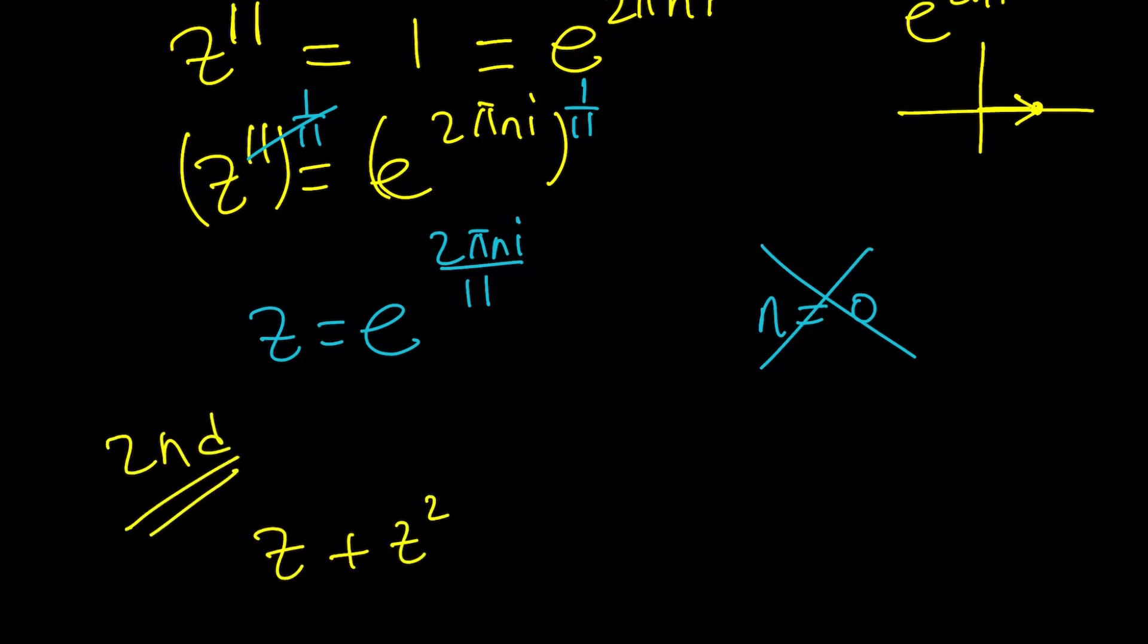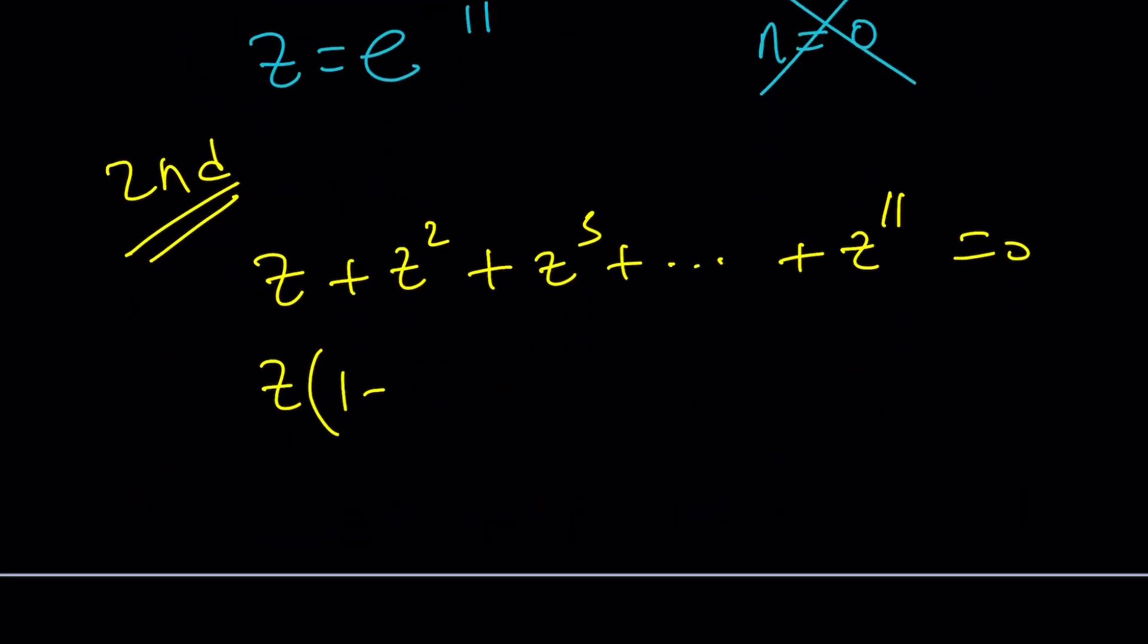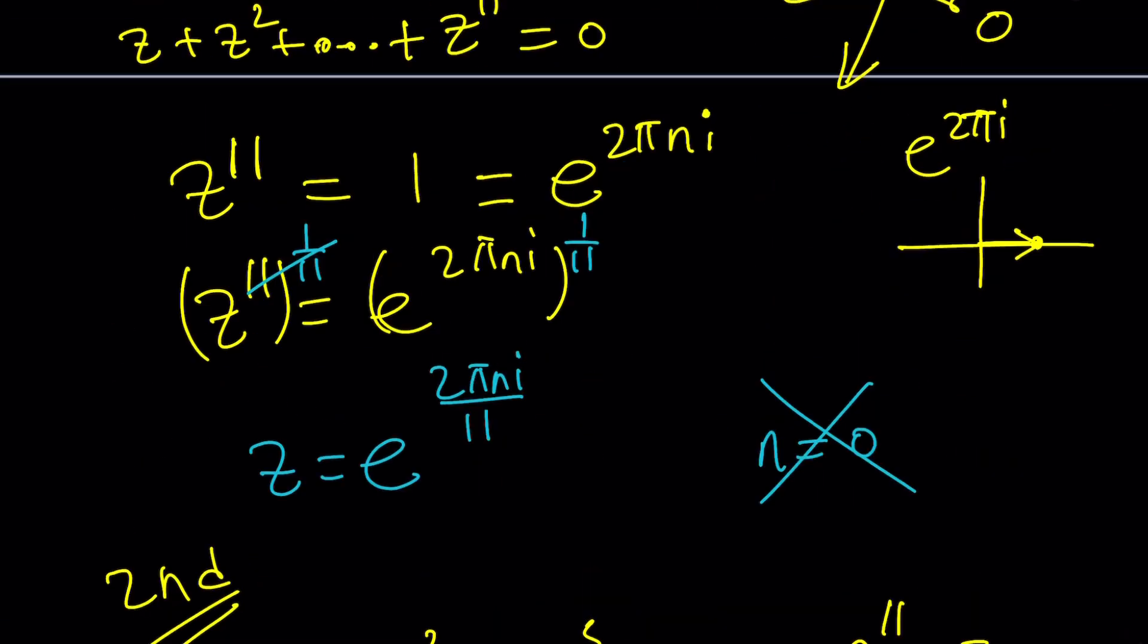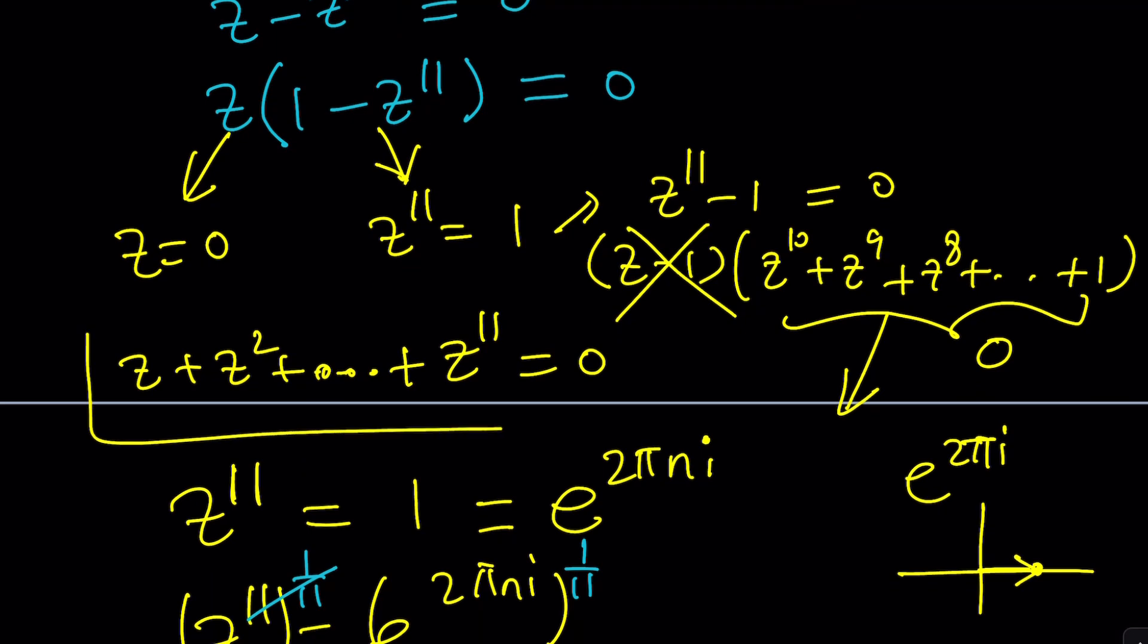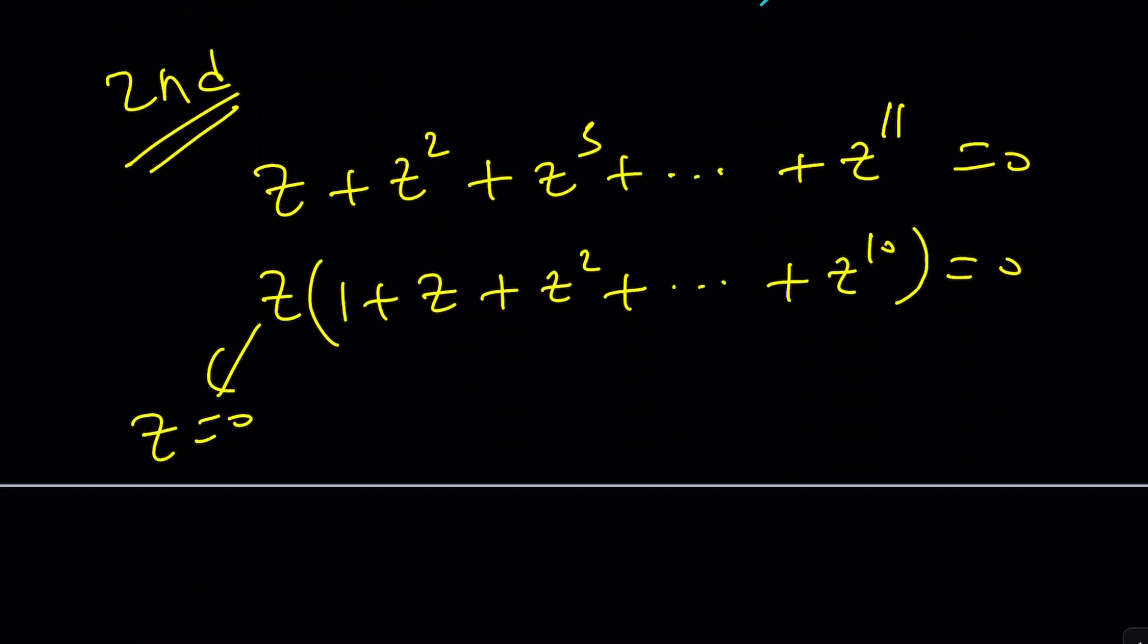Second method. The first method added one and subtracted one from both sides. And now we're going to use a different approach. Why not factor out a z and write this as one plus z plus z squared, all the way up to z to the 10th power equals zero. Obviously, from here, we get z equals zero. And if you go back here, this should look familiar to you. Look at that. You can factor out a z. And yes, you will get the same thing. Make sense?